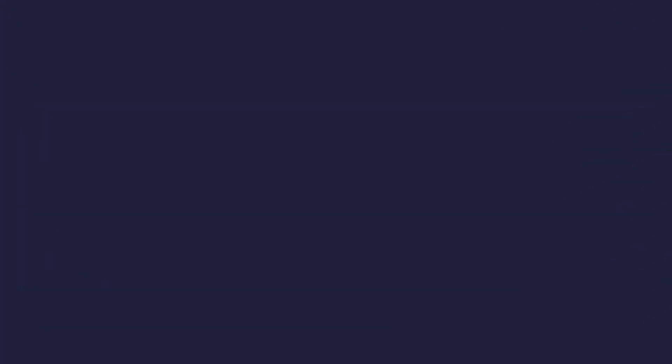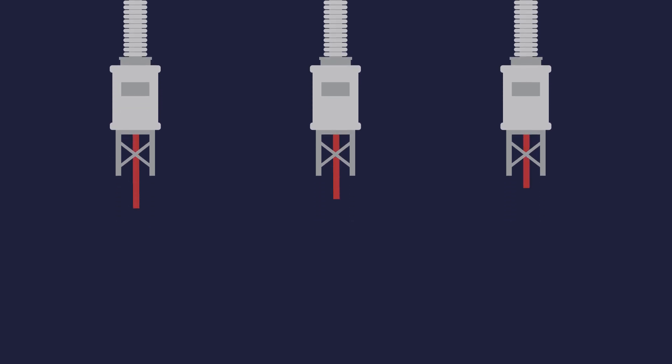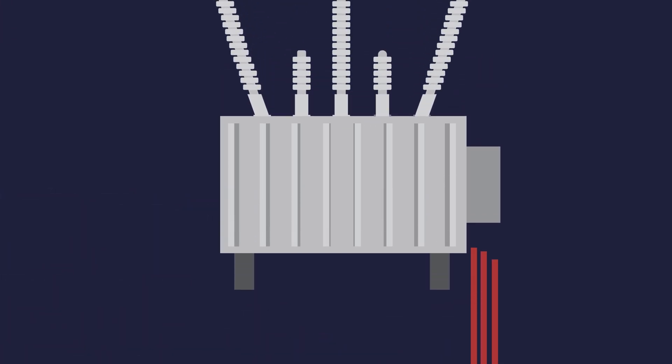Voltage Reference requires an additional voltage input from each bushing to be monitored. These voltage inputs can make retrofitting the reference methodology cost prohibitive if a voltage source is not already available, because of additional hardware and cabling.